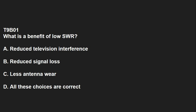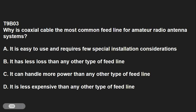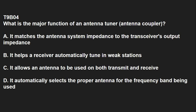T9B01: What is a benefit of low SWR? That's reduced signal loss. T9B02: What is the most common impedance of coaxial cables used in amateur radio? 50 ohms. T9B03: Why is coaxial cable the most common feed line for amateur radio antenna systems? It is easy to use and requires few special installation considerations. T9B04: What is the major function of an antenna tuner or antenna coupler? It matches the antenna system impedance to the transceiver's output impedance.